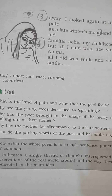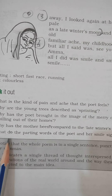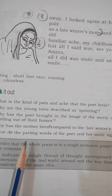Question number four: Why has the mother been compared to the late winter's moon? Answer: Just as a late winter's moon looks hazy and appears to lack brightness and luster due to mist and fog, similarly the poet's mother, who is now old, looks pale and devoid of exuberance. Her face looks dull and colorless due to old age.